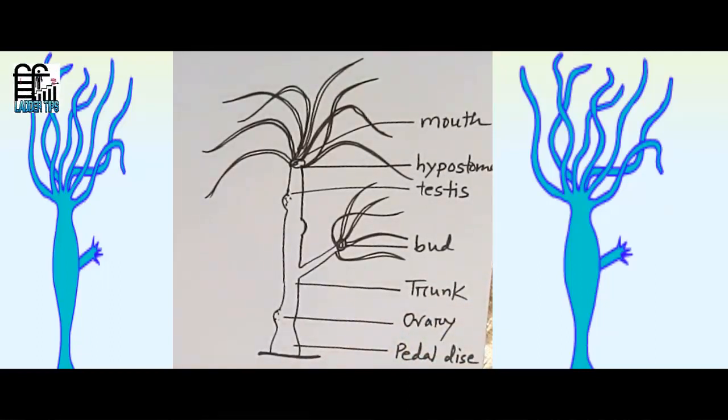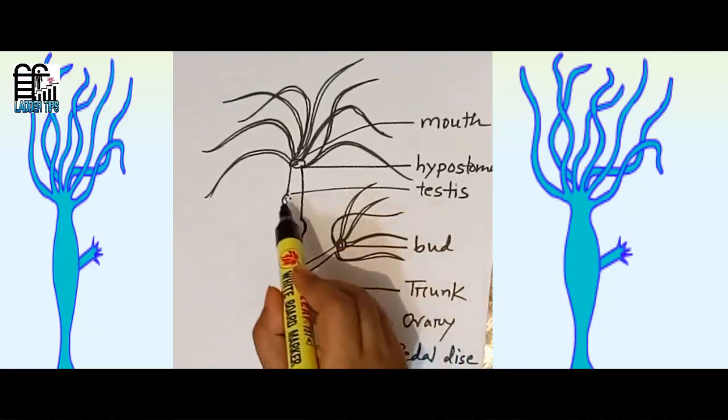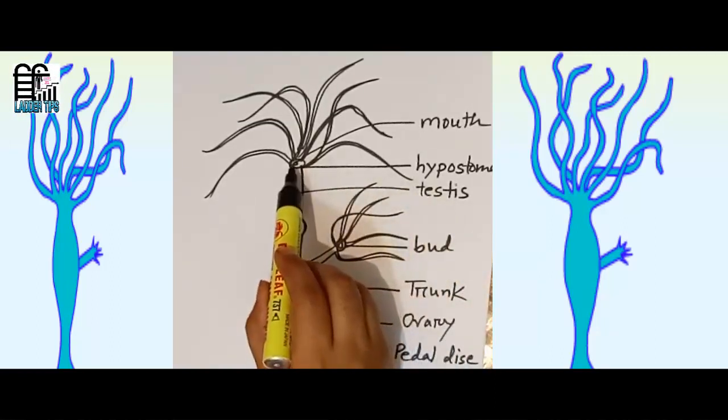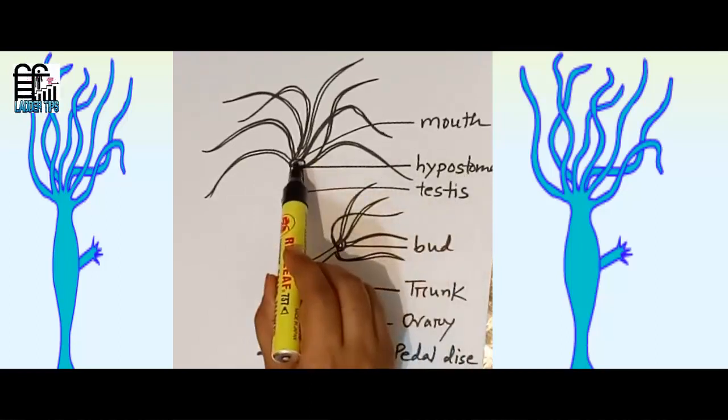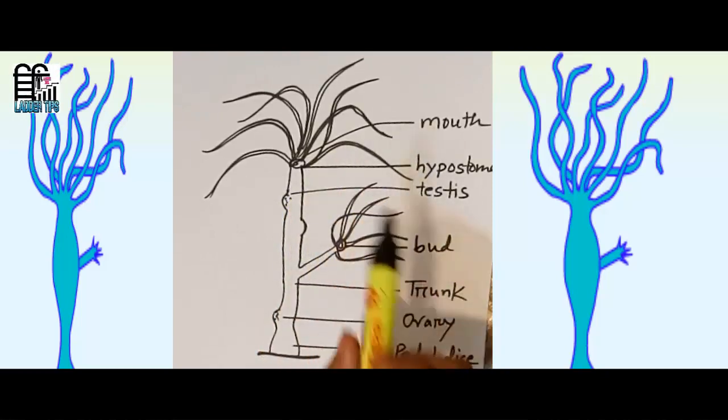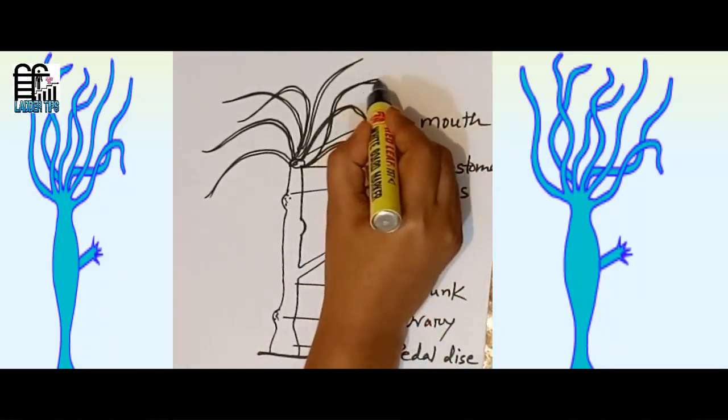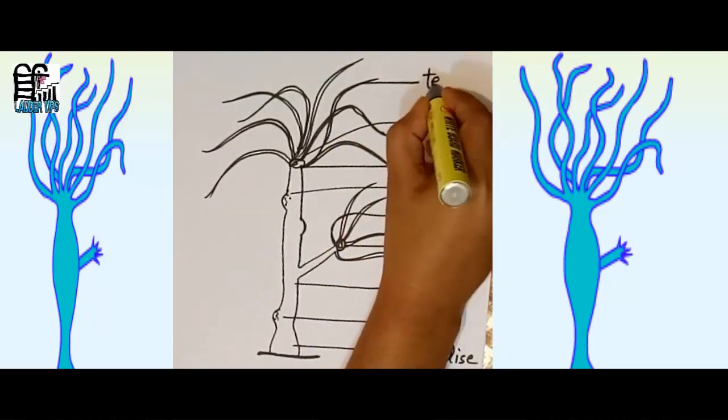So see, this is pedal disk, this is ovary, then trunk, then trunk bears bud, this part is testis, and this is actually hypostome, and the apex of hypostome is mouth, and these are actually tentacles.